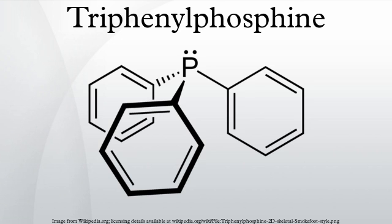Vaska's complex, trans-IrCl(CO)(PPh3)2, is also historically significant. It was used to establish the scope of oxidative addition reactions. This early work provided the insights that led to the flowering of the area of homogeneous catalysis. NiCl2(PPh3)2 is a tetrahedral complex of Ni(II).